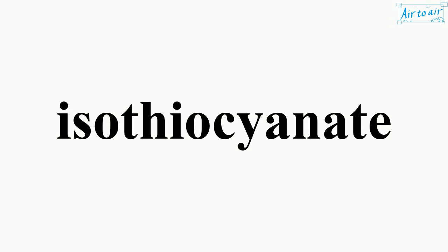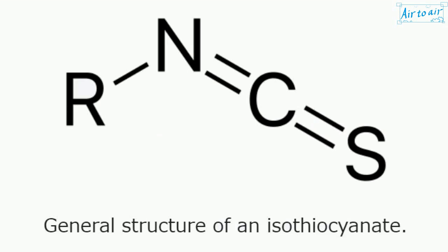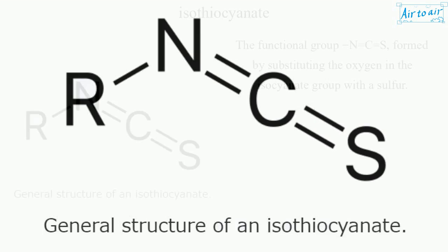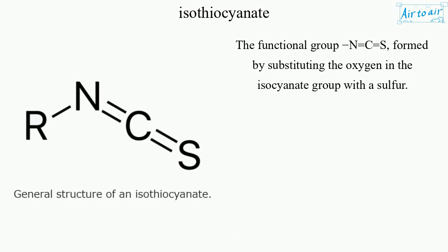Isothiocyanate. The functional group minus N equals C equals S, formed by substituting the oxygen in the isocyanate group with a sulfur.